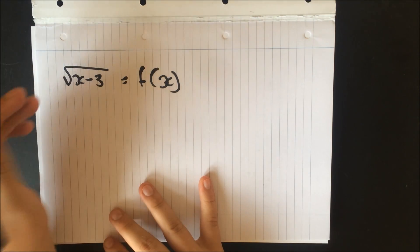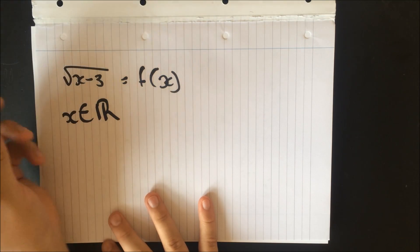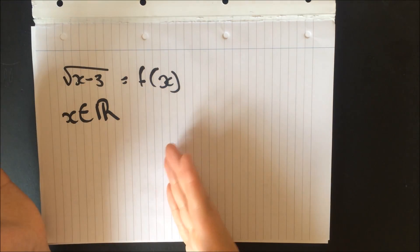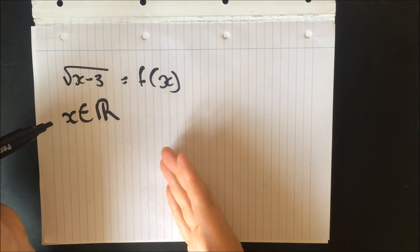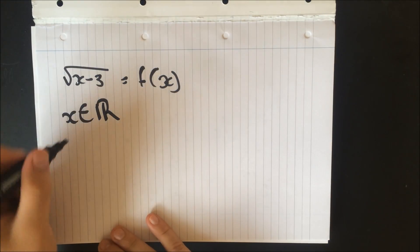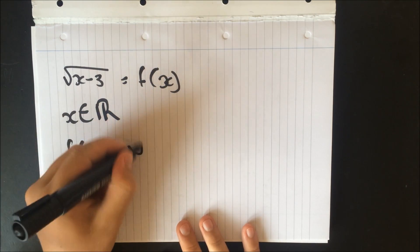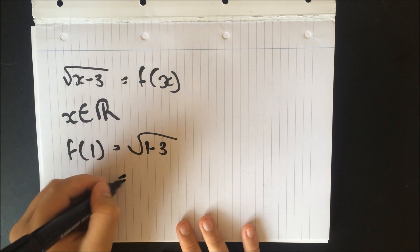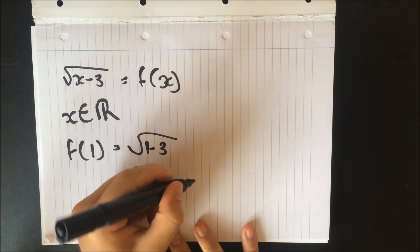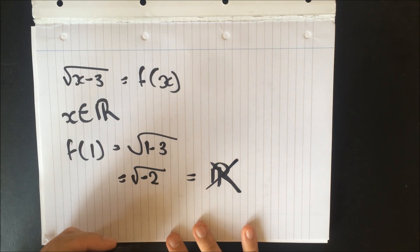We know that x must be in the subset of real numbers, because we don't want imaginary numbers. So this is our domain so far. However, if we take f of 1, for example, that will give us 1 minus 3, which is the square root of minus 2, and we know that would not be a real number.